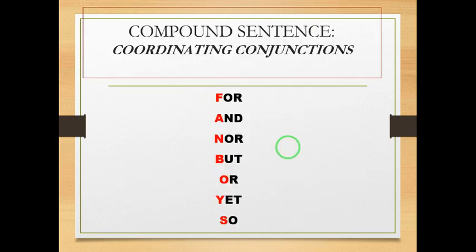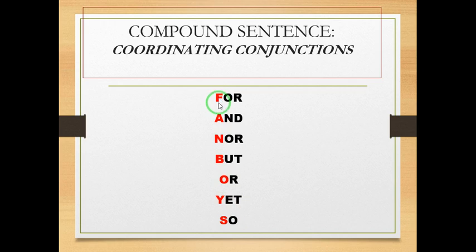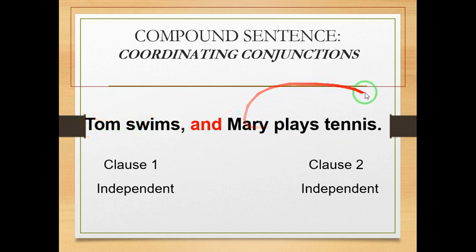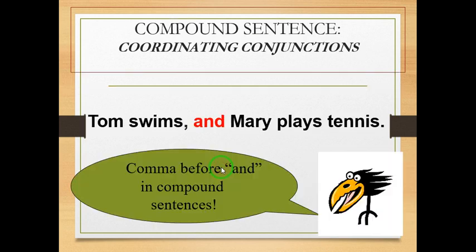The conjunctions that make a compound sentence are for, and, nor, but, or, yet, so — or we can simply summarize them with the word FANBOYS. Tom swims and Mary plays tennis. Tom swims is the first independent clause. Mary plays tennis is another independent clause. We joined them together with the conjunction and, preceded by a comma. This makes a compound sentence. Don't forget the comma, please.